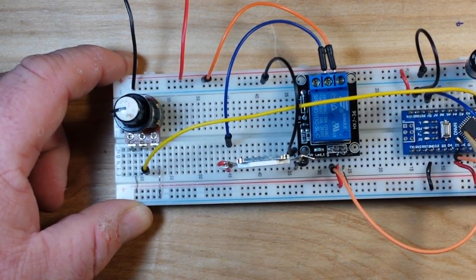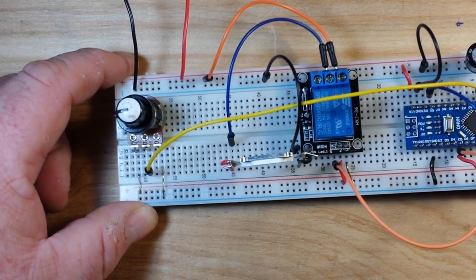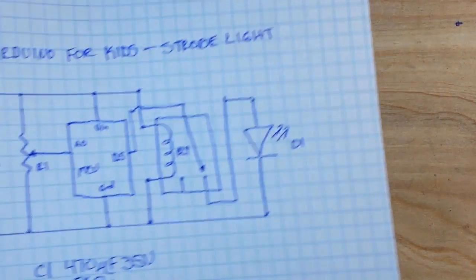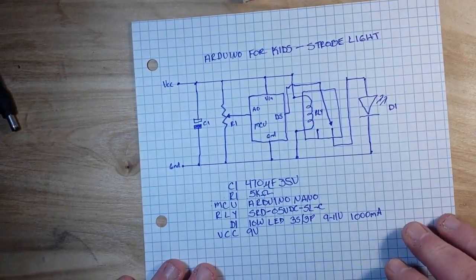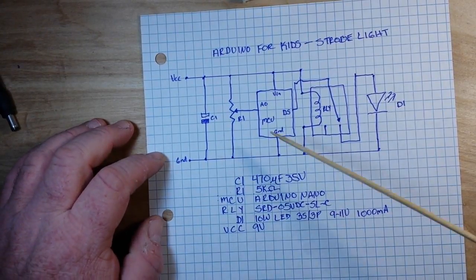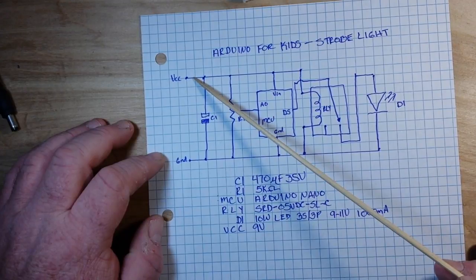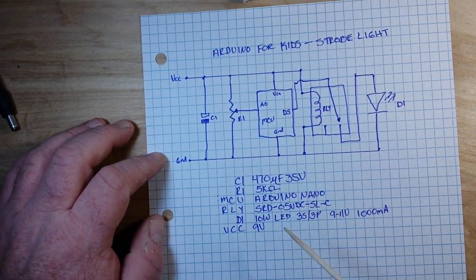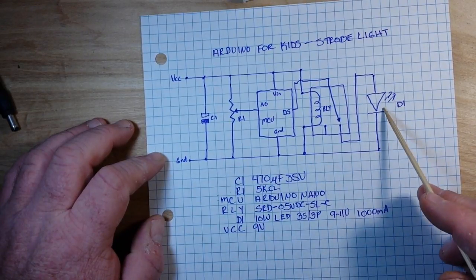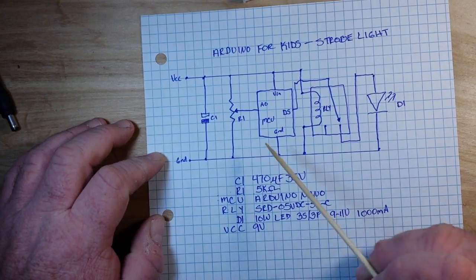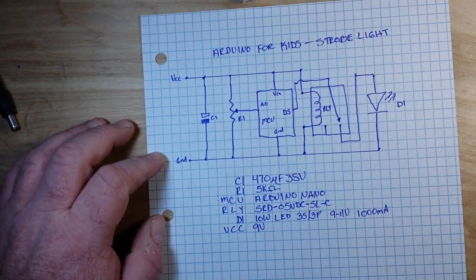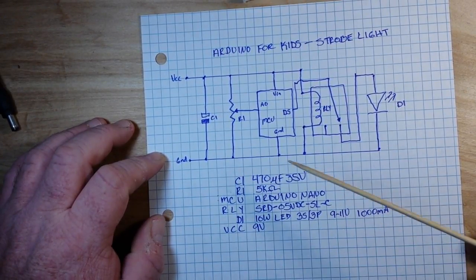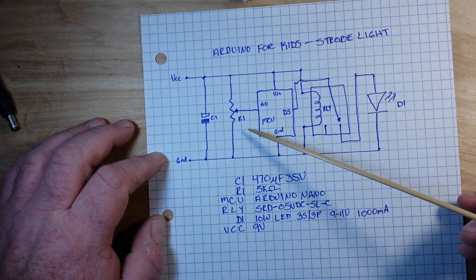An Arduino Nano and a capacitor. Let's talk about how everything is connected with this handy dandy schematic that I've drawn up. We are bringing in 9 volts to our VCC rail because our LED D1 requires 9 to 11 volts. We have a 470 microfarad capacitor going from VCC to ground, and that is just to stabilize the power because when the LED is switched on it's going to take a big bite.